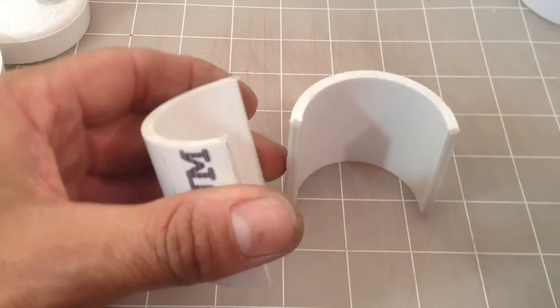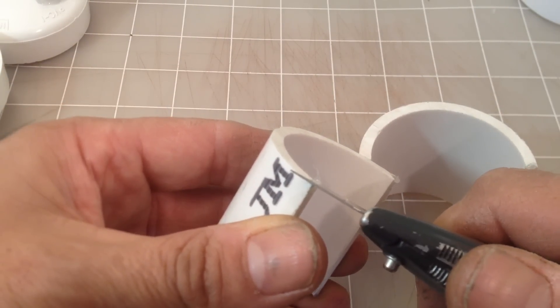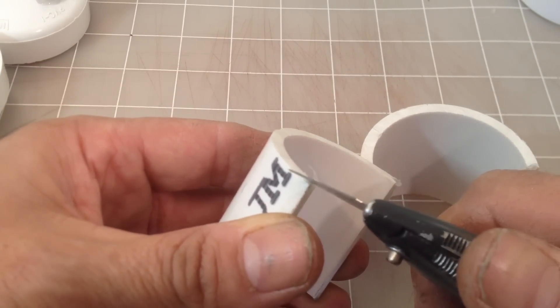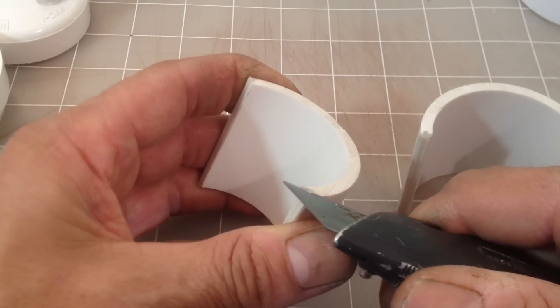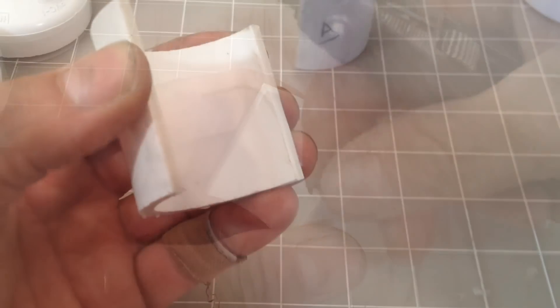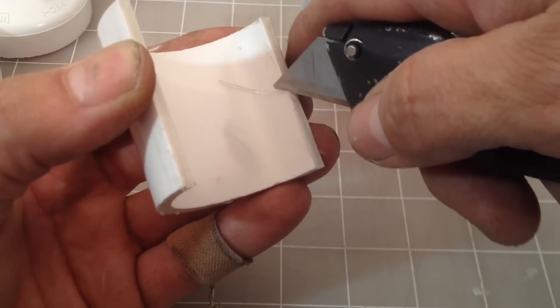Next I carefully trim with the utility knife any excess silicone that may interfere with creating the airtight seal, trimming it flush at the end. I also carefully remove the excess silicone from the inner side wall.